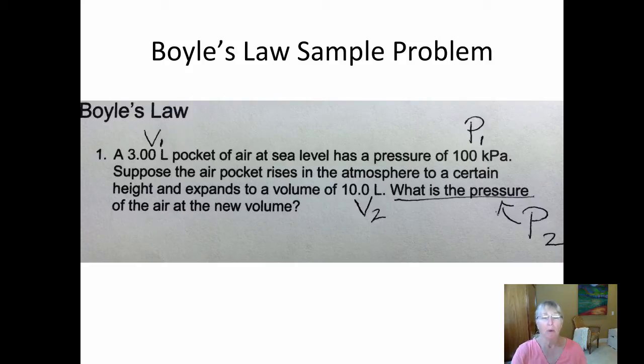So if Boyle is the VP, then that means I need to find initial and final values for the volume and the pressure. The next step is I go through and identify what is the starting volume, what is the starting pressure. And as you can see, it starts with a 3-liter pocket of air, V1, and it's at a pressure P1 of 100 kPa.